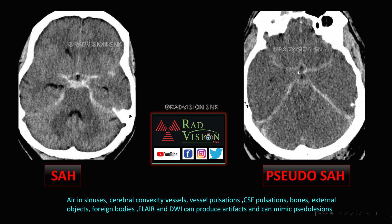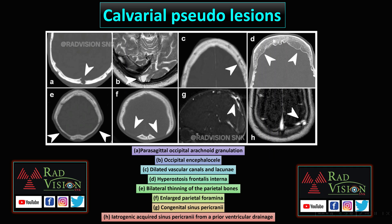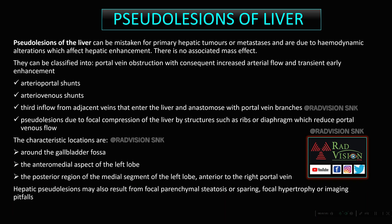Other calvarial pseudo lesions include parasagittal occipital arachnoid granulations, occipital encephalocele, vascular canals or lacunae, hyperostosis frontalis interna, bilateral thinning of parietal bones, bilateral enlarged parietal foramina, and sinus pericranii — which can be congenital or acquired after ventriculoperitoneal drainage. These can all mimic calvarial pathologies.